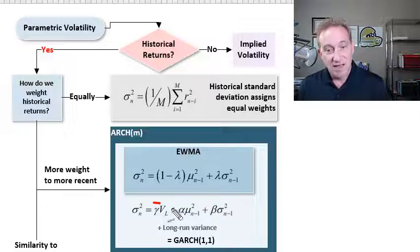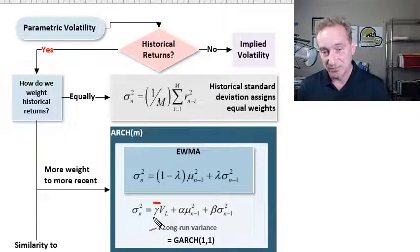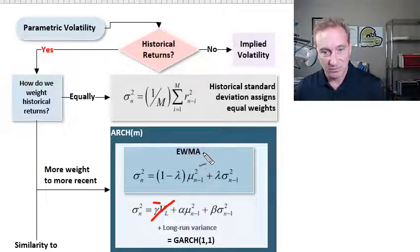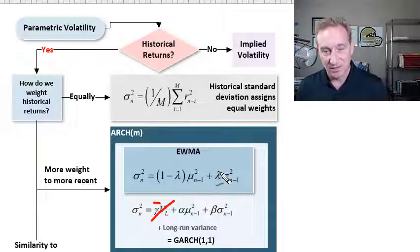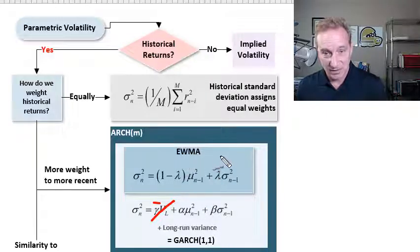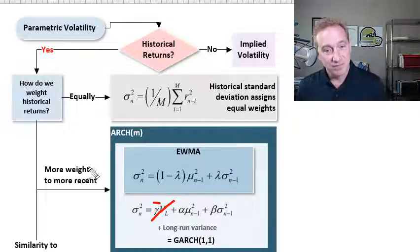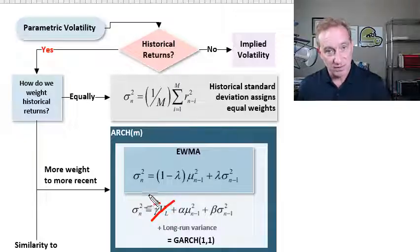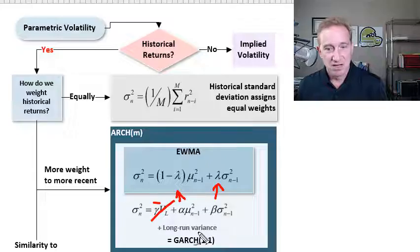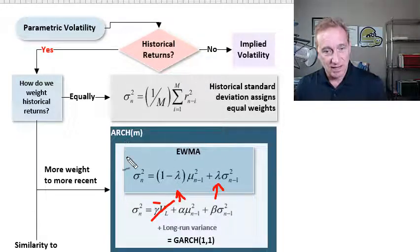Here's the GARCH(1,1). Both of the models in this box give more weight to recent returns, and it's specifically an exponentially declining weight in constant proportion. If I take the weight assigned to the long-run or unconditional variance, denoted Greek gamma, and give it zero weight, the GARCH(1,1) collapses to the exponentially weighted moving average. We could say EWMA is a special case of GARCH(1,1), or GARCH(1,1) generalizes the EWMA. Both share in common that more recent weights get greater return and they decline exponentially.